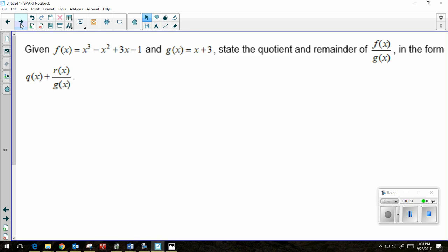Given f(x) = x³ - x² + 3x - 1 and g(x) = x + 3, state the quotient and remainder of f(x) divided by g(x) in the form q(x) plus r(x) over g(x). So there's a lot of function notation happening here, but don't get confused. They just want you to state the quotient and the remainder.